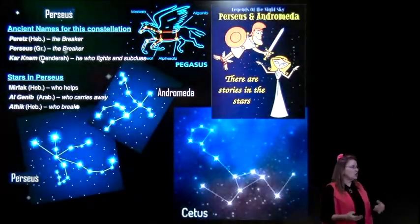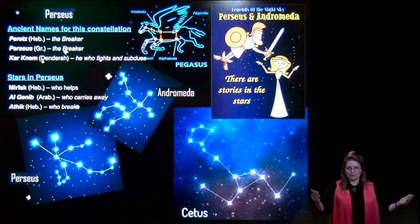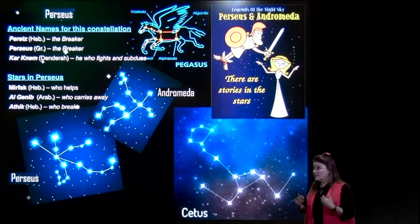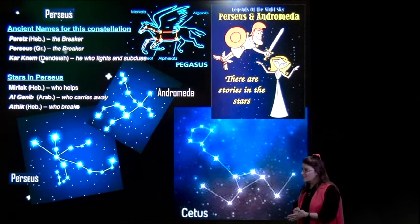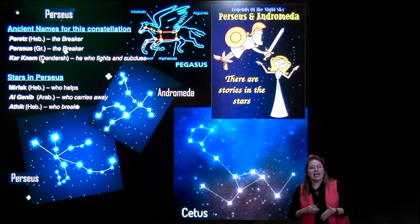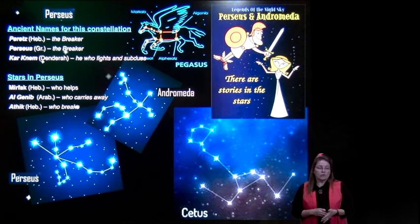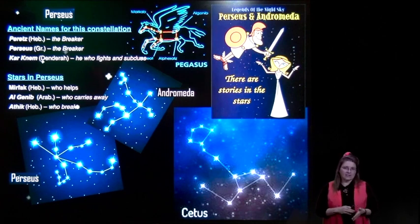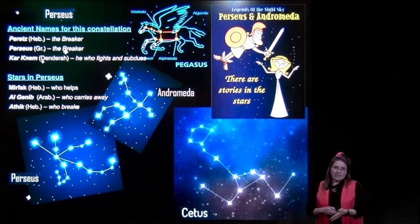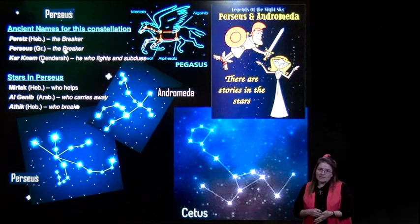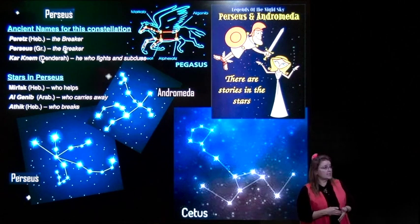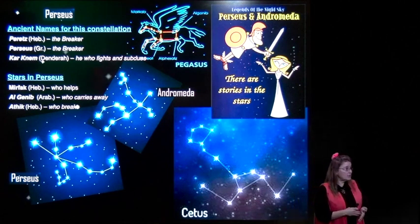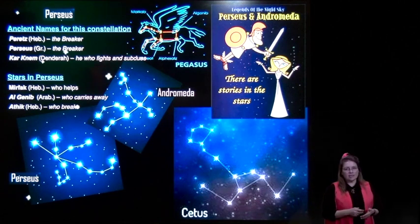And enter on the scene—Perseus, the hero. Perseus translates directly from the Greek as 'the breaker.' What's he going to break? He's going to break the chains of Zion. He who fights and subdues, he who helps, he who carries away, and he who breaks.